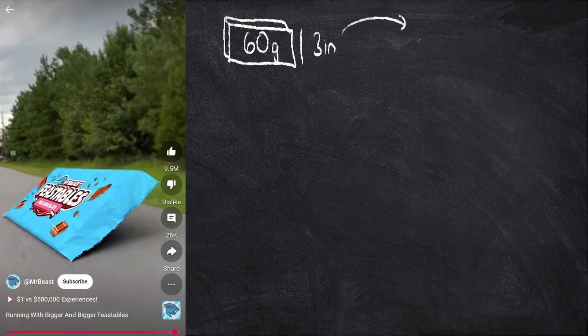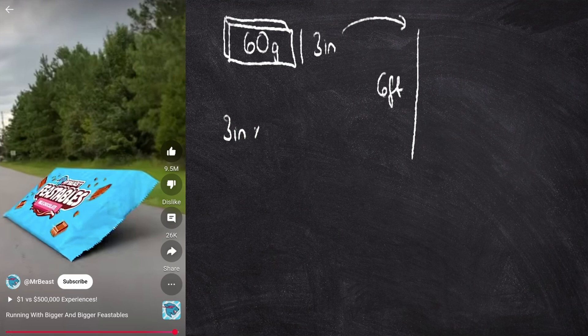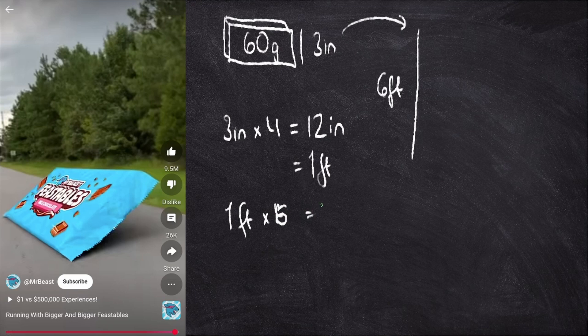So in order to scale this chocolate bar up to six foot, we need to first multiply three inches by four to get 12 inches, which is one foot. And then we need to multiply this one foot by six to get it up to six foot.